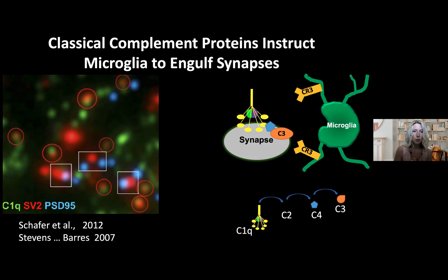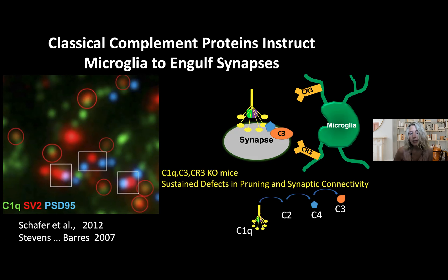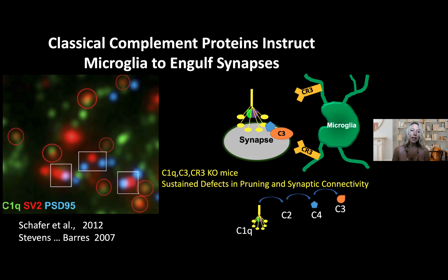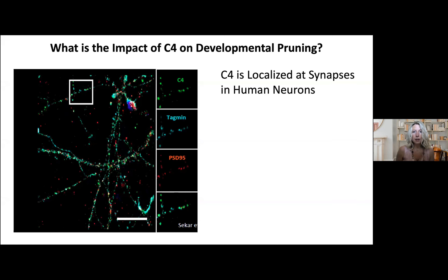We've been studying this in the context of the visual system, which is our model circuit because a lot is known about synaptic pruning there. Work that began in Ben Barres's lab and continued in my own showed that mice lacking either C1q, C3, or CR3 — the phagocytic receptor on microglia that recognizes complement, and the only cell type in the healthy brain that expresses CR3 — had a sustained defect in synaptic pruning.